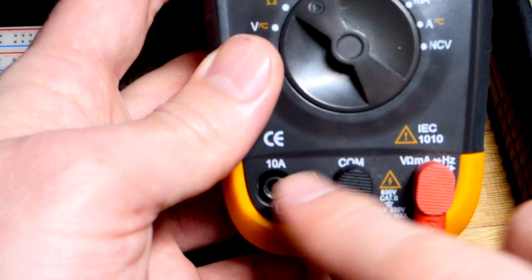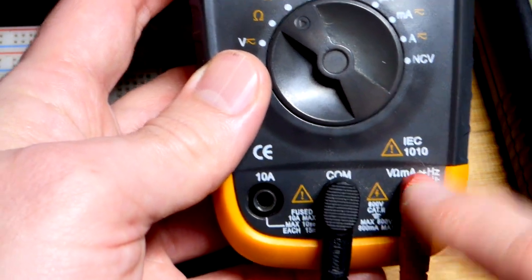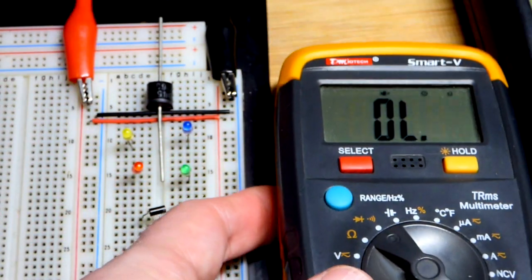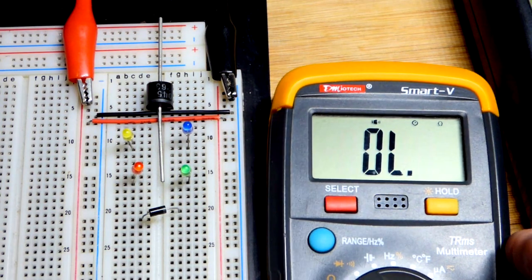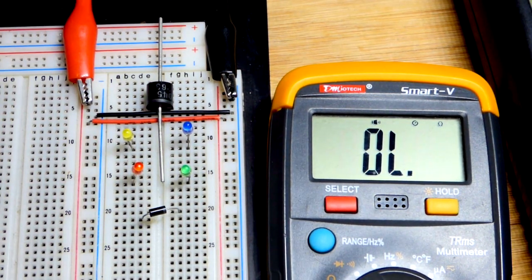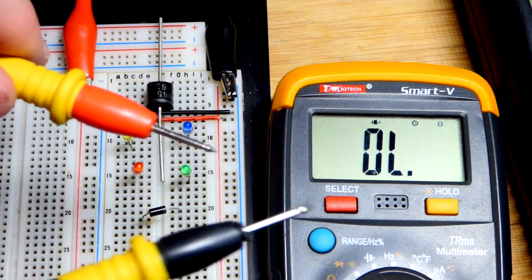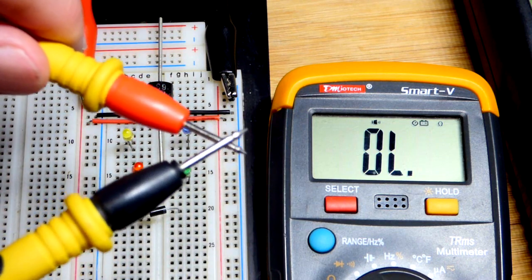For both of these readings, we leave the red probe where it is in this meter. Other meters, you may have to move it. I only have to move the red probe with this meter for high current.